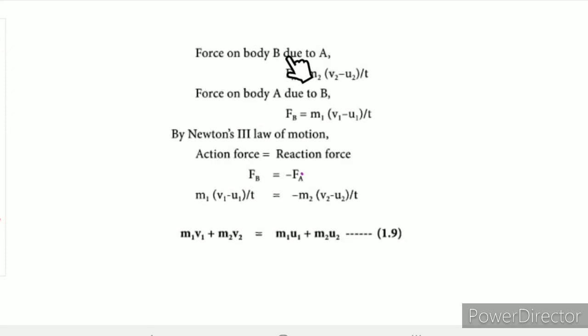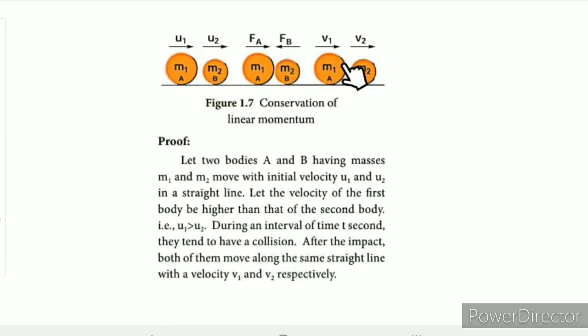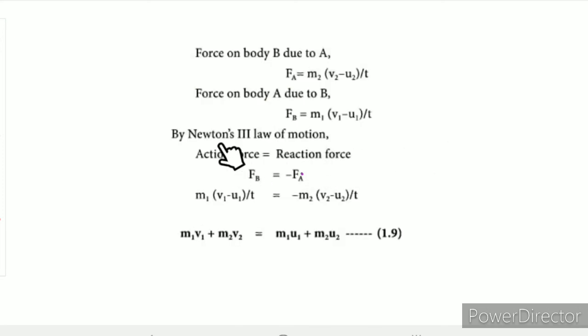Force on body B due to A: FA is equal to M2 into (V2 minus U2) divided by T. That is force A. This is mass M2 and velocity V2. This is acceleration.